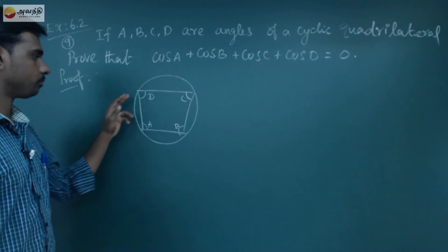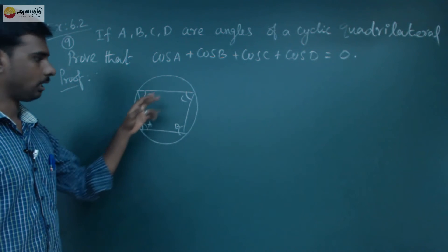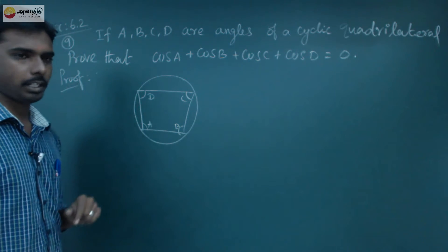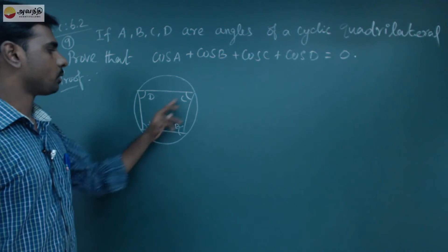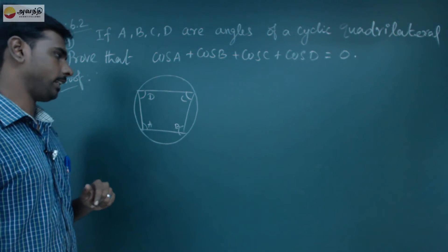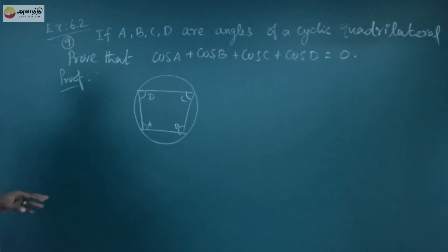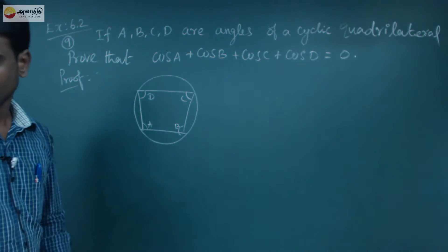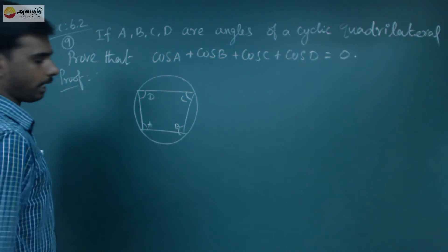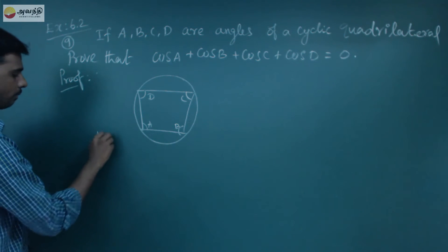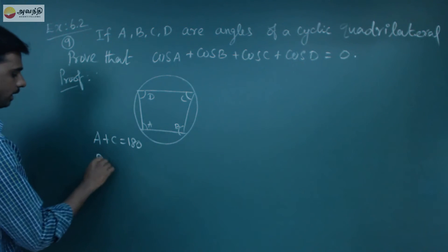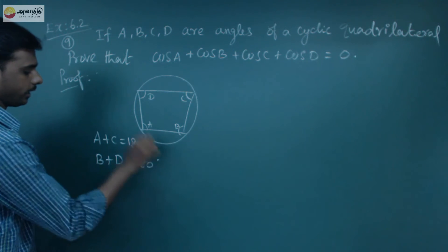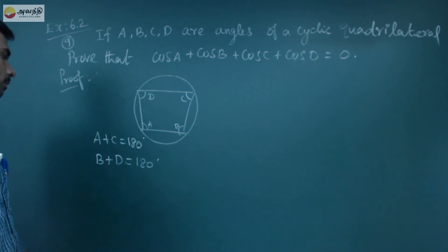How do we prove this? For a cyclic quadrilateral, if you add all four angles, you get 360 degrees. More specifically, the opposite angles add up to 180 degrees. So a plus c equals 180 degrees, and b plus d equals 180 degrees. The total is 360 degrees. We will use these two relations to prove the result.